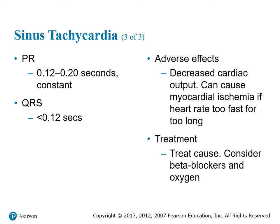Your PR interval is anywhere from 0.12 to 0.20 seconds, which is consistent — it doesn't change. Your QRS is anything less than or equal to 0.12 seconds. Some adverse effects of sinus tachycardia include decreased cardiac output, which can cause myocardial ischemia if the heart rate becomes too fast for too long. Treatments can include beta blockers to help slow down the heart, or increased oxygen to help slow the heart rate.